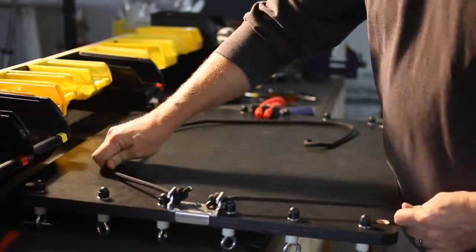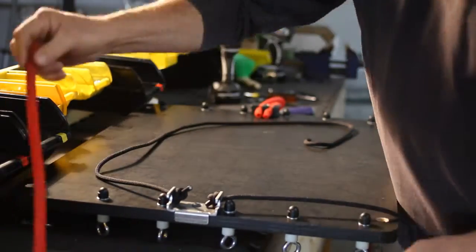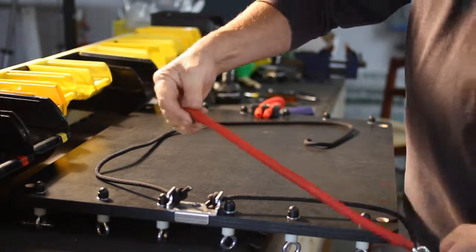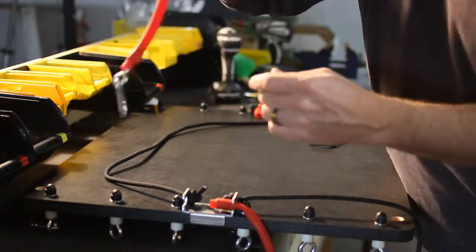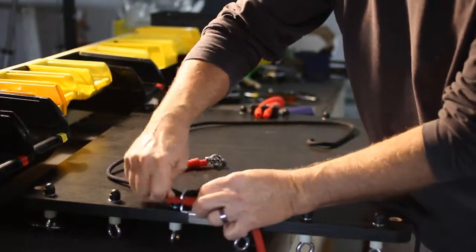So we have our arrester ropes through like this. And then our red bungee cords simply snap in like so and secure like that.